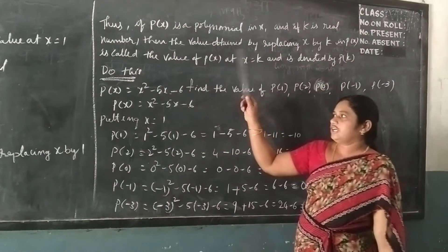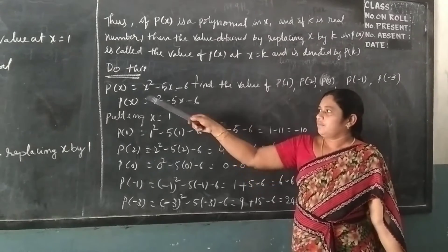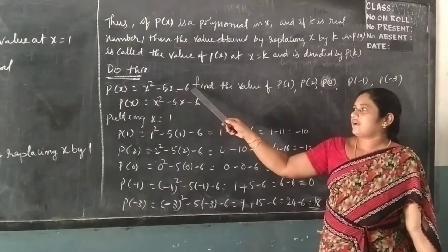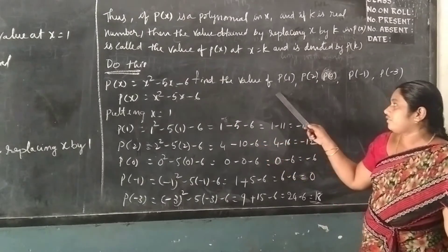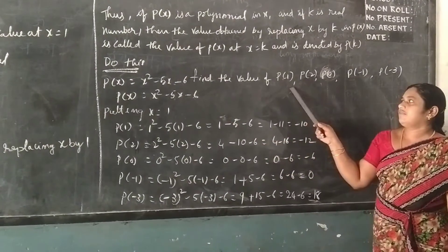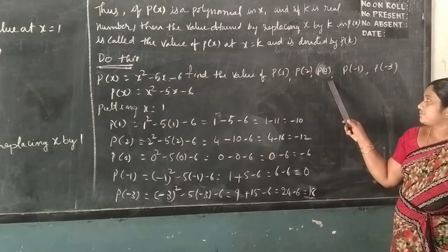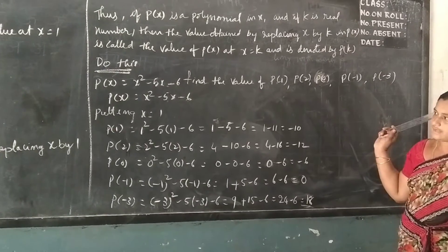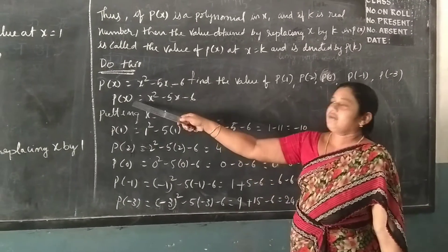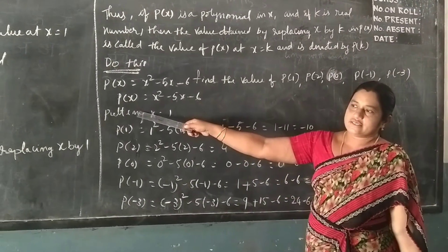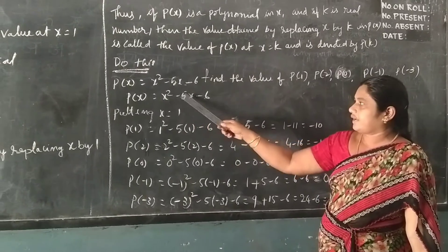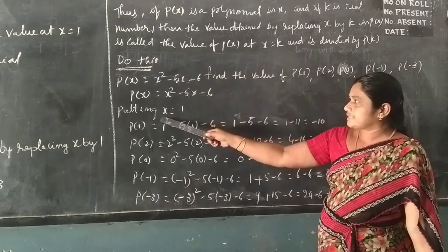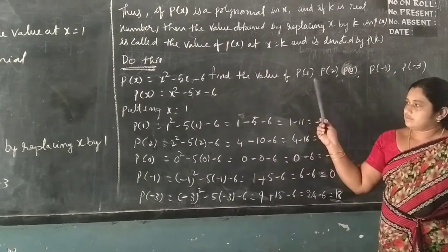Now, in your textbook do the first problem. P(x) = x² - 5x - 6. Find the value of P(1), P(2), P(0), P(-1), and P(-3).